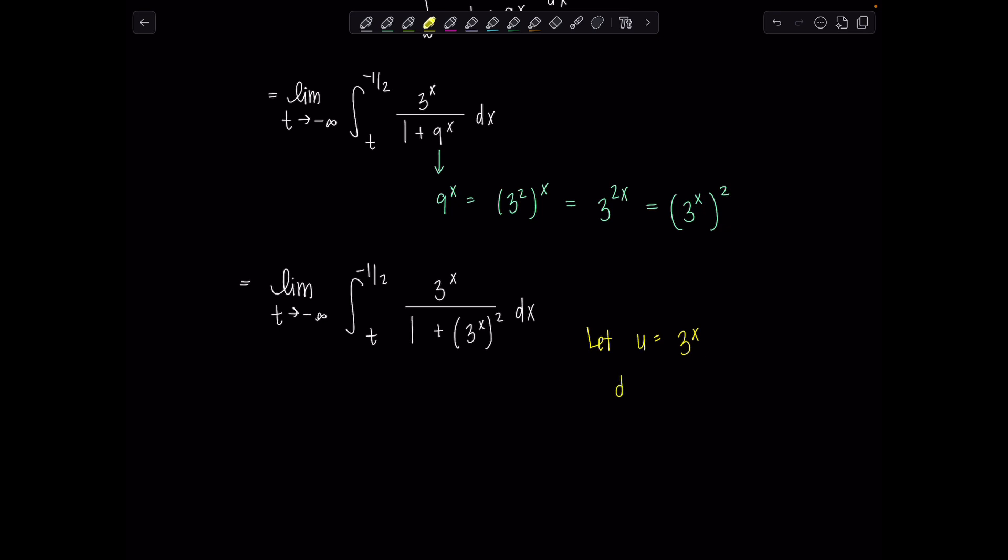So what's the derivative of 3 to the x? Maybe we don't practice this one as much as e to the x so it's 3 to the x times ln of 3 and then we have dx over here getting ready for the u sub. So this works out nicely because we have that 3 to the x up top right? That means 1 over ln of 3 du is dx and then also we need to change those limits of integration.